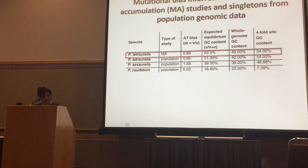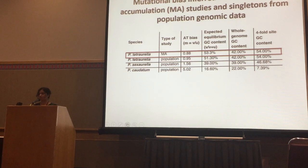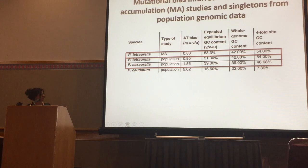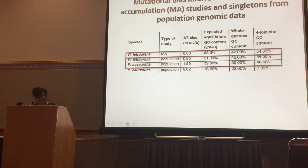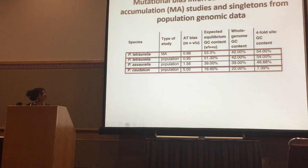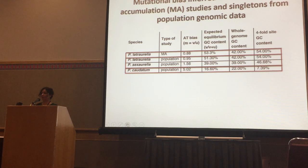We get very similar values from population genomic data, where we used singletons at fourfold degenerate sites to estimate the mutation spectrum, and similarly find that the AT bias is relatively close to one. On the other hand, when we look at Paramecium tetraurelia, we estimate the AT bias to be much higher. One question is what kind of mutation spectrum you should typically find in mitochondria.